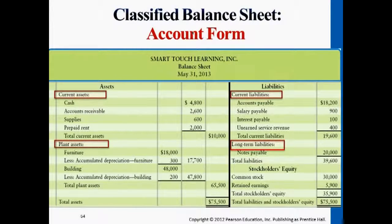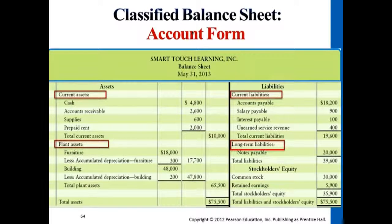This is how it's represented in a classified balance sheet. We still have the left side for assets and the right side for liabilities and equity. On the left side you see the current asset section and then the plant asset section. Plant asset and long-term asset are interchangeable terms, just as current asset and short-term asset are interchangeable terms.